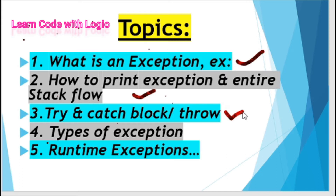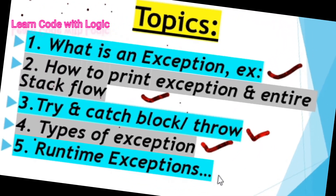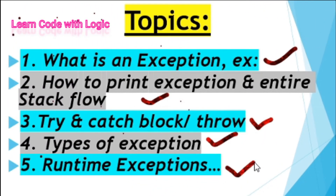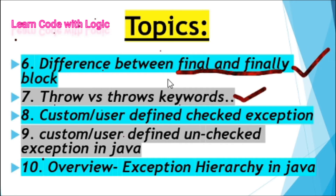We'll see how to deal with the try and catch block, and the throw keyword. Further, we'll discuss what are the types of exceptions and the list of runtime exceptions. Then we'll go over the difference between final, finally, and finalize — this is an interview question — and one more important question: the difference between throw and throws keyword, which we will see with an example.